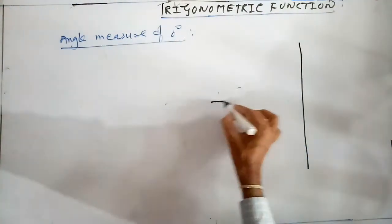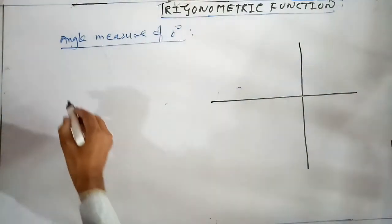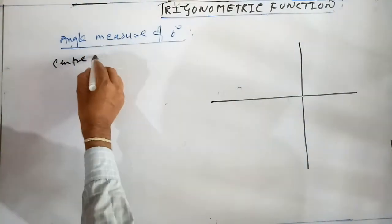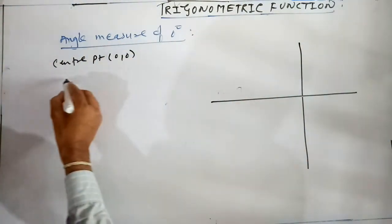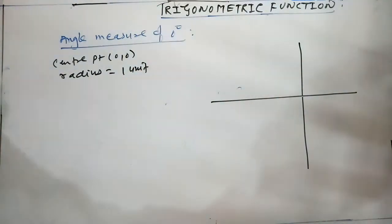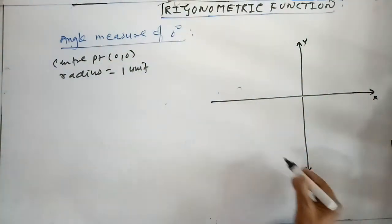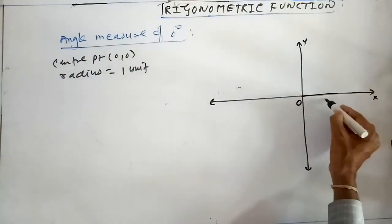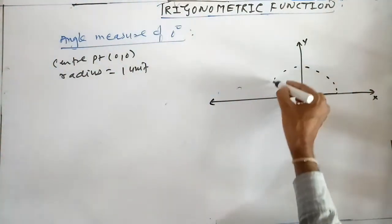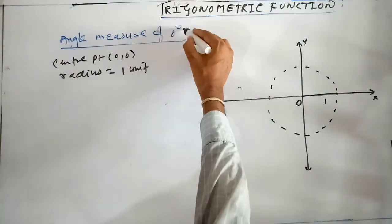Standard unit circle क्या होता है — जिसका center point origin होता है और radius one unit होती है। इस x-y plane में center point origin और radius 1 के लिए एक circle निकालते हैं।